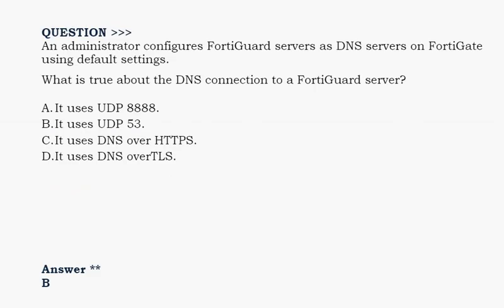Next question: An administrator configures FortiGate to use FortiGuard servers as a DNS server on FortiGate using default settings. What is true about the DNS connection to a FortiGuard server? Option A: It uses UDP 8888. Option B: It uses UDP 53. Option C: It uses DNS over HTTPS. Option D: It uses DNS over TLS. The correct answer is Option B.